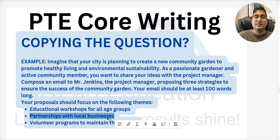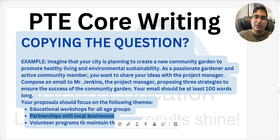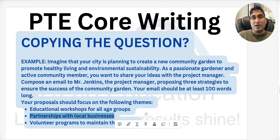The best approach is to use close synonyms. For example, instead of 'partnerships,' use 'networking' or 'collaborating.' For 'businesses,' there's nothing much closer, so just use 'businesses.' You could say 'we should start collaborating with businesses in the local vicinity' — you've paraphrased at least one word and rephrased the expression. This shows the AI you're answering the question while also demonstrating creativity and paraphrasing skills. Don't be too creative that it's unrecognizable, but don't copy-paste either.